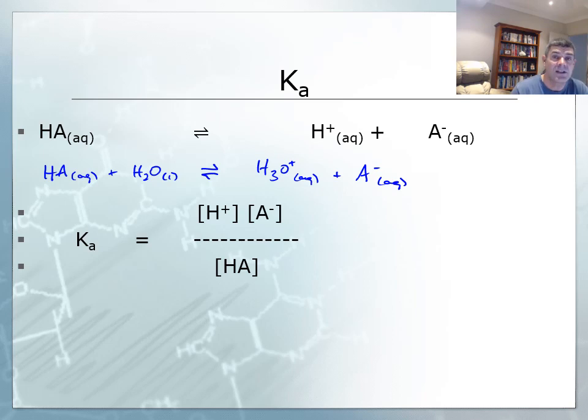So this is the dissociation that occurs, or the ionization that occurs when the proton from the acid is donated to the water molecules in order to form the hydronium ion and the anion.